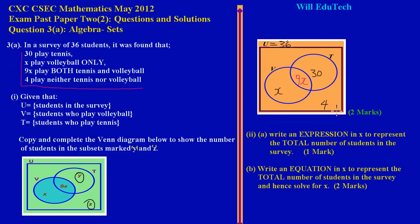This is how your completed diagram should look — that's an easy two marks. Now in part 2a they're asking us to write an expression in X to represent the total number of students in the survey. Note carefully: an expression does not have an equal sign. That's a mistake a lot of students make. When writing an expression you should not include an equal sign.